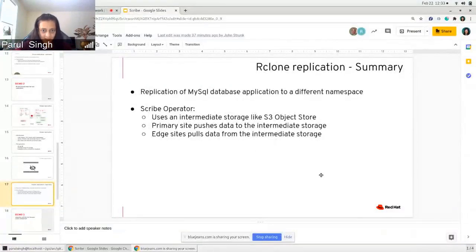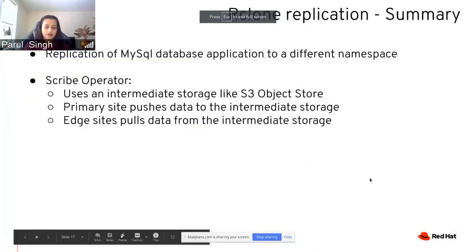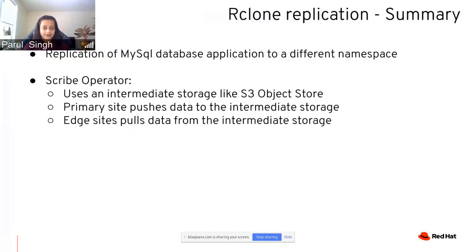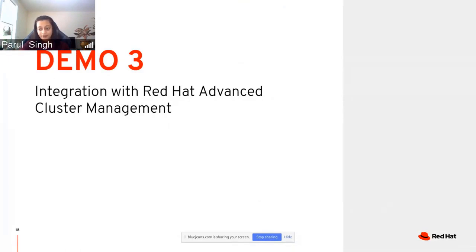To recap demo two: we replicated a MySQL application from one namespace to another using rclone-based replication. Scribe uses an intermediate S3 object store — the primary site pushes data to it while edge sites pull from it. This demonstrates the potential for edge scenarios. The third demo, presented by Ryan, will show how Scribe integrates with Red Hat Advanced Cluster Management to scale applications across multiple clusters.